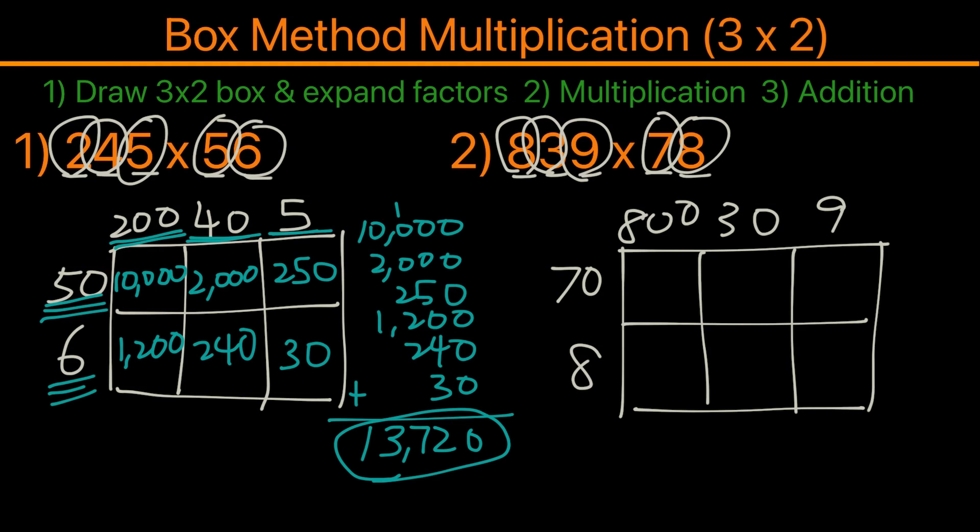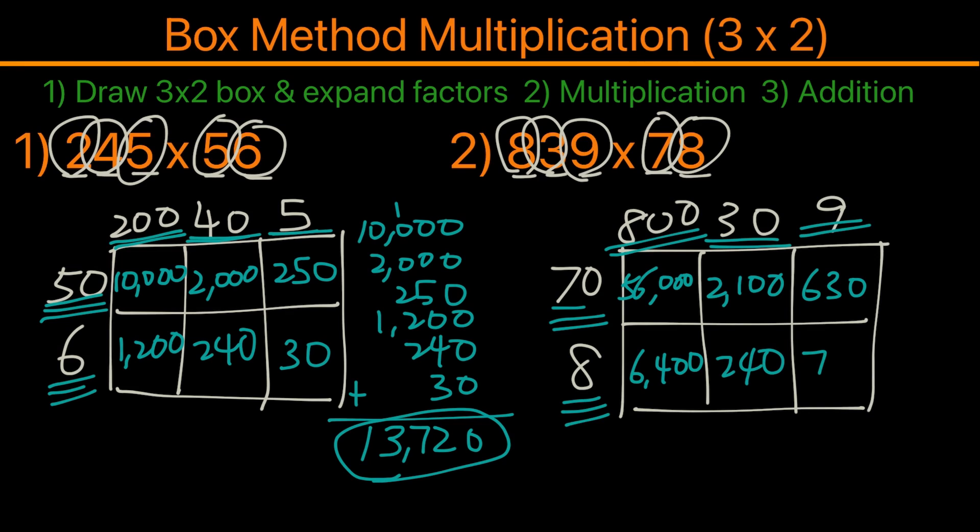Then we will take 800 times 70, that will become 56,000. Then we have 30 times 70, and that becomes 2,100. Next we'll have 9 times 70, that equals 630. Then we have 8 times 30, we have 240, and finally 8 times 9, and that's 72.